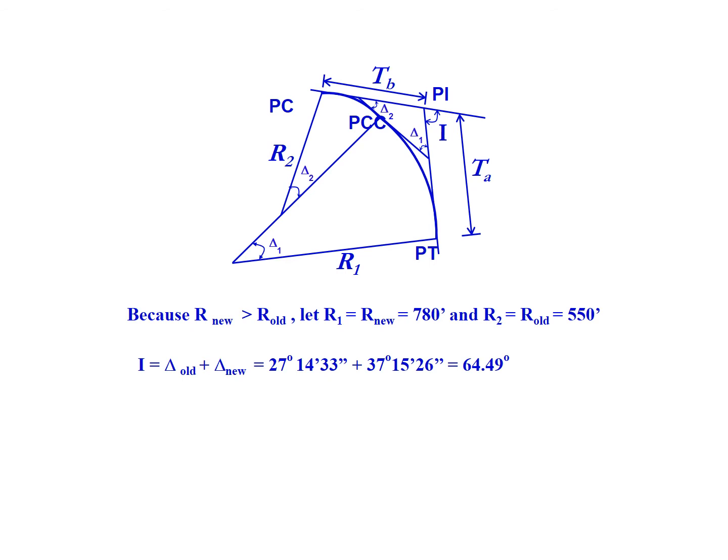We can also find the total intersecting angle, which is each deflection angle for each curve. So 27 degrees 14 minutes 33 seconds plus 37 degrees 15 minutes 26 seconds gives us an intersecting angle of 64.49 degrees.